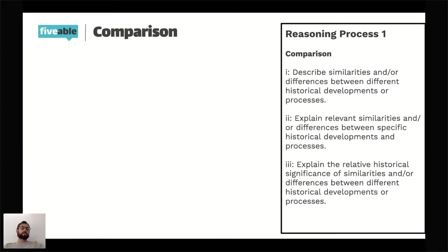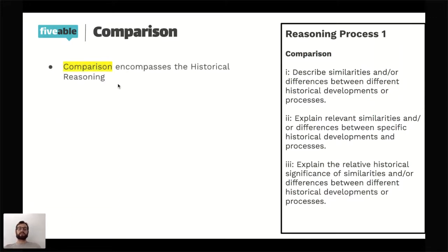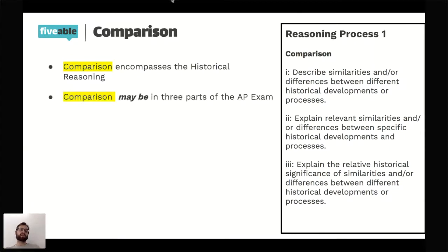Let's make sure we go over the thinking skill known as comparison. This is one of your historical reasoning processes — essentially taking two things and putting them side by side. You're going to see comparison in three parts of the AP exam. You may not see it in all three parts, but you'll definitely see it in at least one.